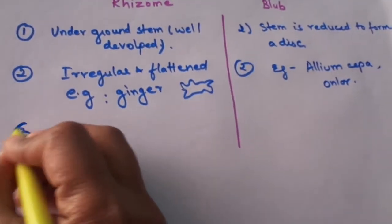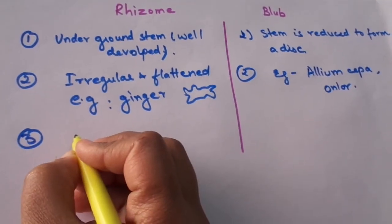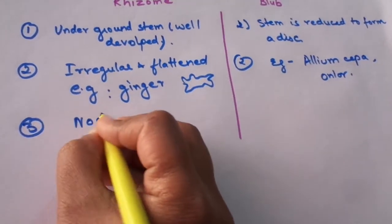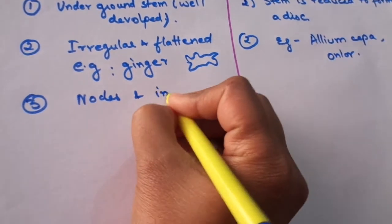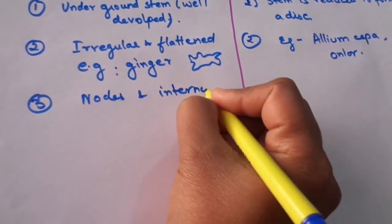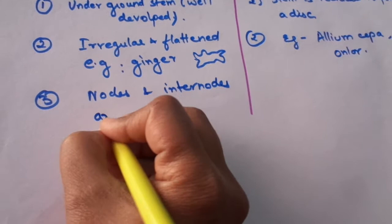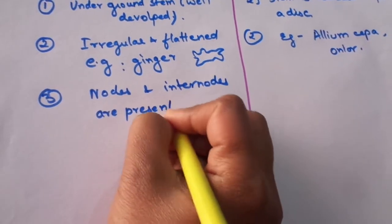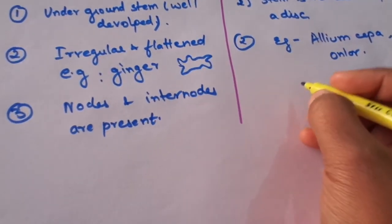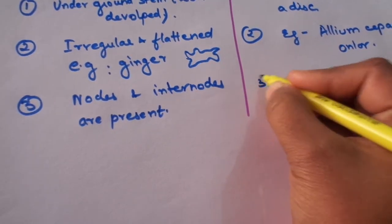The third difference is, the rhizome, it bears nodes and internodes. So, nodes and internodes are present. And in the case of bulb, it is lacking.